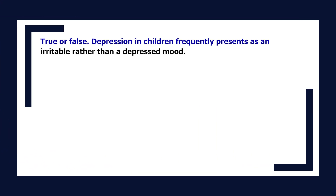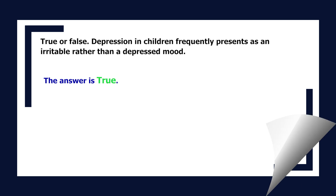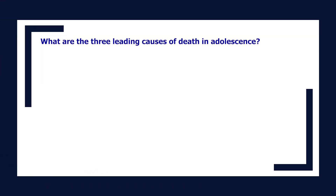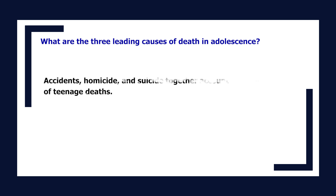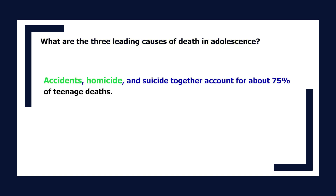True or false: depression in children frequently presents as an irritable rather than depressed mood. The answer is true. What are the three leading causes of death in adolescence? Accidents, homicide, and suicide together account for about 75% of teenage deaths.